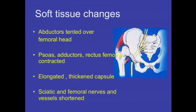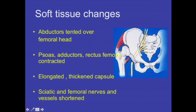You cannot neglect the soft tissues. The abductors are usually horizontal and tented over the femoral head. The psoas, adductors, and rectus femoris muscles are all contracted, and you have to do adequate release in the proximal femur depending on how much you are bringing the center of rotation down. The capsule is usually elongated and thickened and must be excised before closure. Neurovascular bundles like the sciatic nerve and vessels are usually shortened. This is one condition where you must do adductor tenotomy preoperatively before giving the lateral position, otherwise it will be difficult to bring the head down into the true acetabulum.